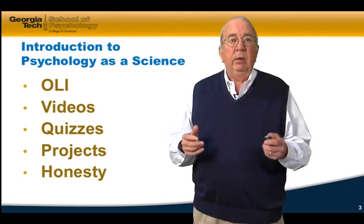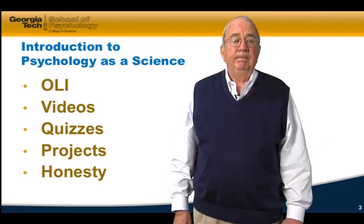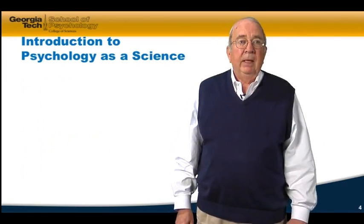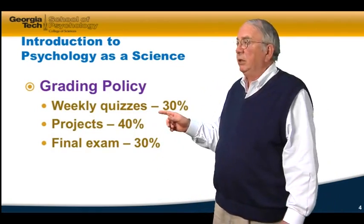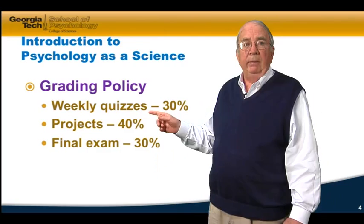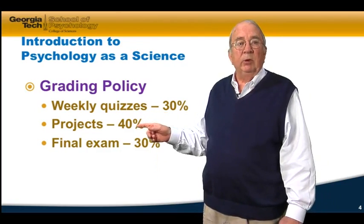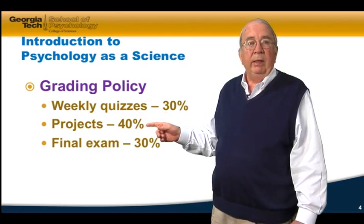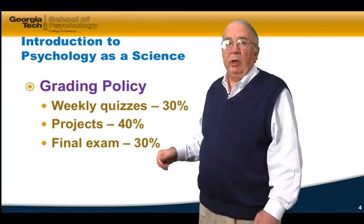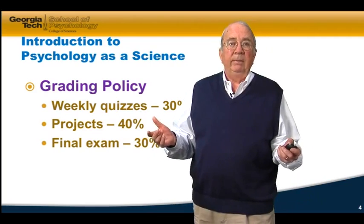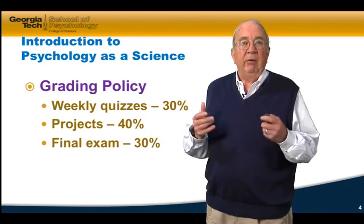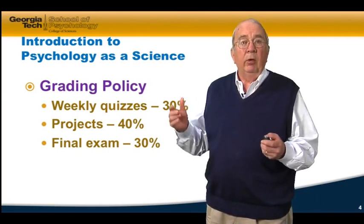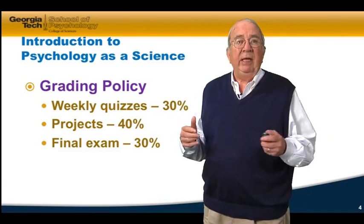The grading policy will be that the weekly quizzes will count 30% of your grade, the projects 20% each or 40% of your grade, and the final exam will be 30%, adding up to 100%. To get a certificate for the completion of the total class, you have to make at least a 70 on all the material, a 70 out of 100 points.